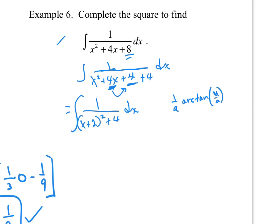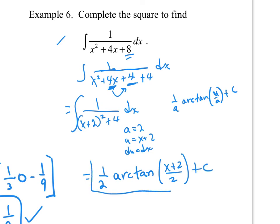Now I can go x plus 2 quantity squared plus 4, do the integral of that dx. This now looks like arctan u over a plus c. a is going to be my 2, u is going to be x plus 2, du equals dx. I don't have to do anything else for balancing. This is simply going to be 1 over a arctan of x plus 2 over a plus c. That's just a nice little added technique for completing the square.